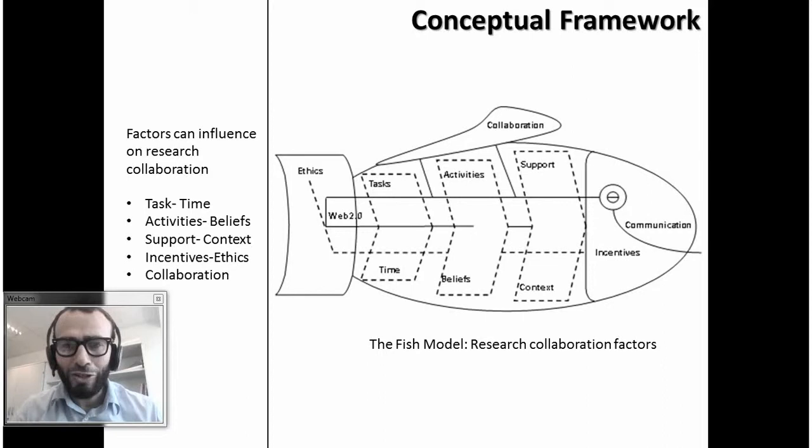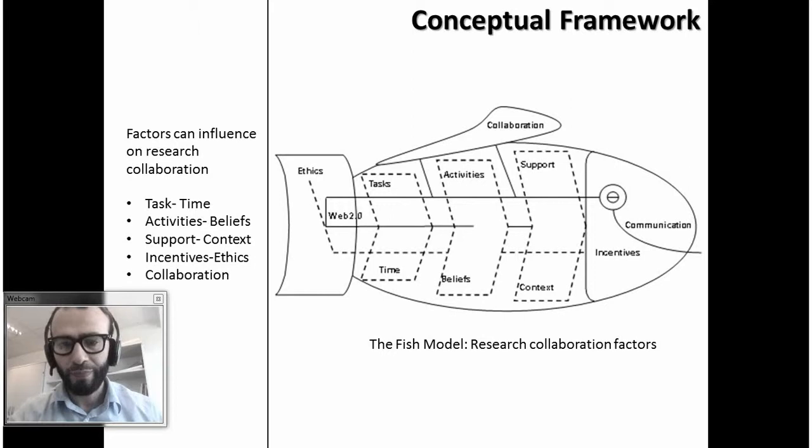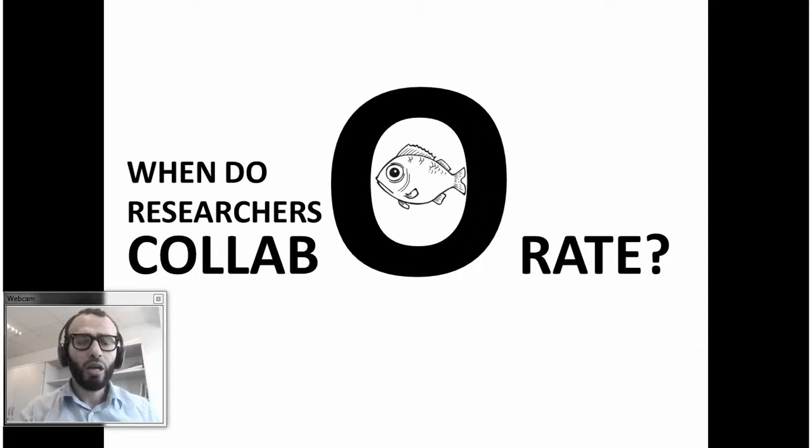Why did we select the fish model? First of all, I like to eat fish — that is basically it! And second, the spine of a fish has two sides. So this is connected with the idea of two. It is easier for us to imagine how two concepts can relate and connect together to reform the whole shape of the fish spine. From this idea, we selected the fish model to build this framework. So I will ask you again: when do researchers collaborate?